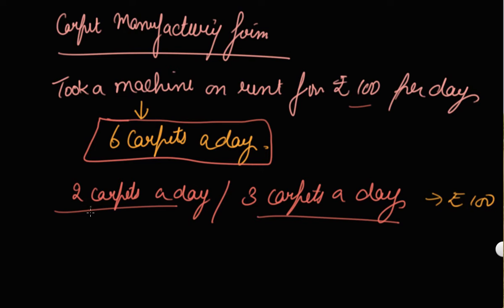So this is your fixed cost. That is, it is not changing with the change in the output. Either you produce 6, 2 or 3 carpets, you have to pay Rs. 100 per day for the machine.